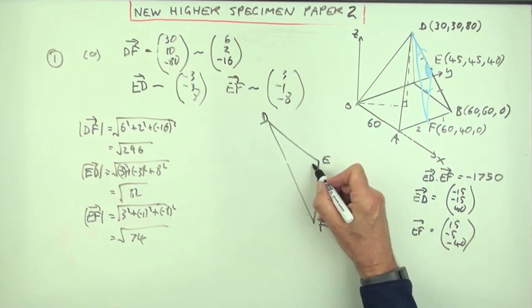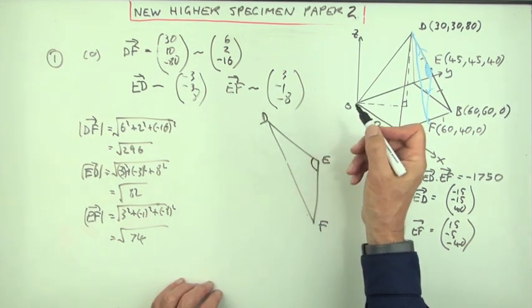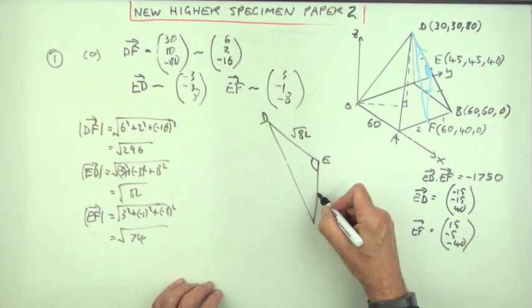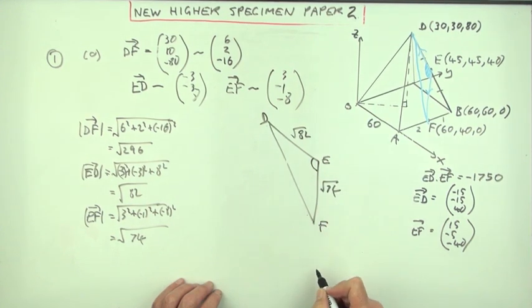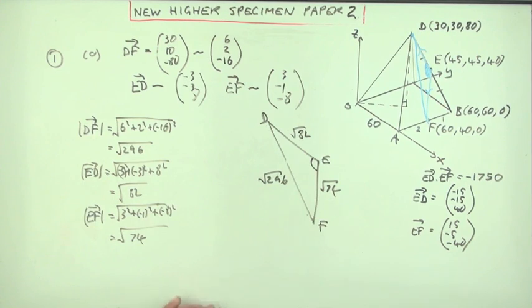So instead of using the scalar product, I can say I can work at that angle because I know these sides. This one is root 82, scaled down. That's actually 5 times that. This is root 74, scaled down. And this one's root 296.